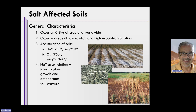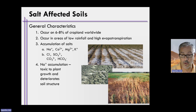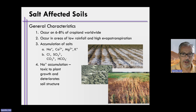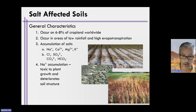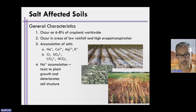In terms of identifying salt-affected soil, some of the general characteristics are this. First of all, this is a global problem. It occurs on about six to eight percent of the cropland worldwide, so it's actually millions of acres. It oftentimes occurs in areas with low rainfall and high evapotranspiration — areas that are typically arid and semi-arid, such as the western United States, western China, or desert ecosystems.